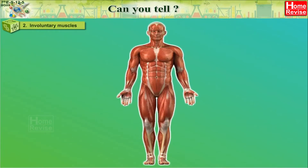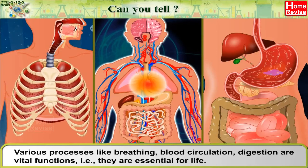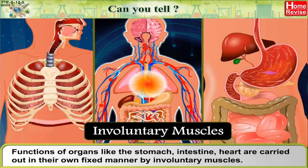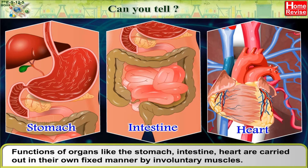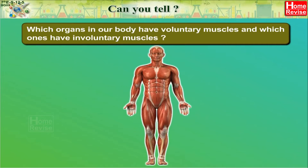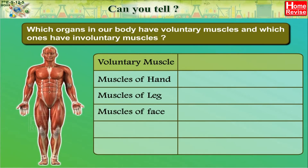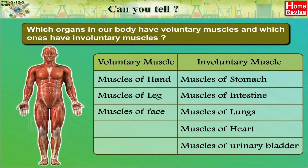2. Involuntary muscles: Various processes like breathing, blood circulation, and digestion are vital functions — they are essential for life and do not depend upon our will. The muscles of organs which carry out these involuntary functions are called involuntary muscles. Functions of organs like the stomach, intestine, and heart are carried out by their own fixed muscles. Voluntary muscles include muscles of the hand, leg, and face. Involuntary muscles include muscles of the stomach, intestine, lungs, heart, and urinary bladder.